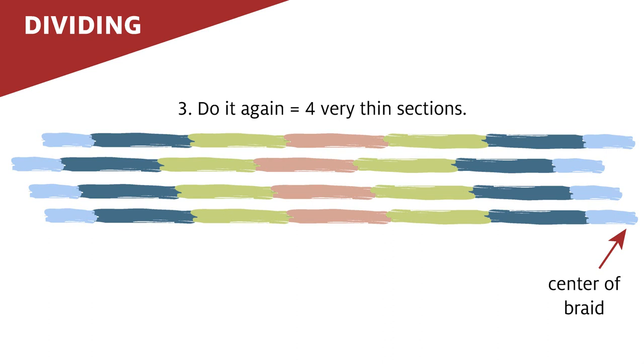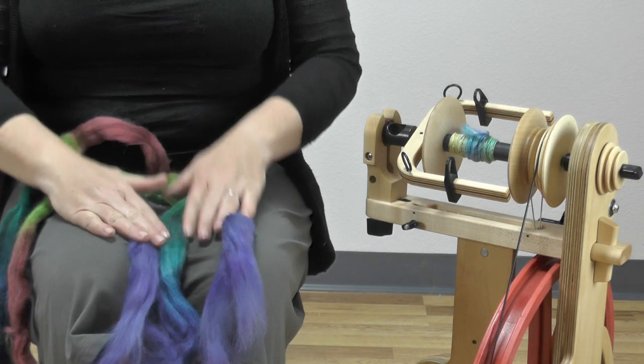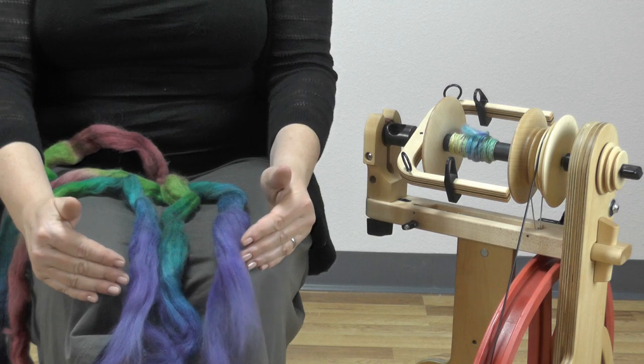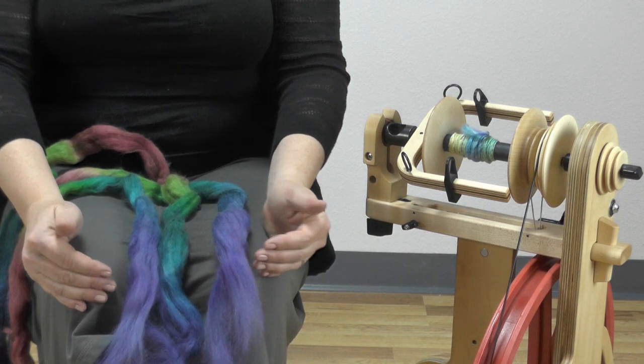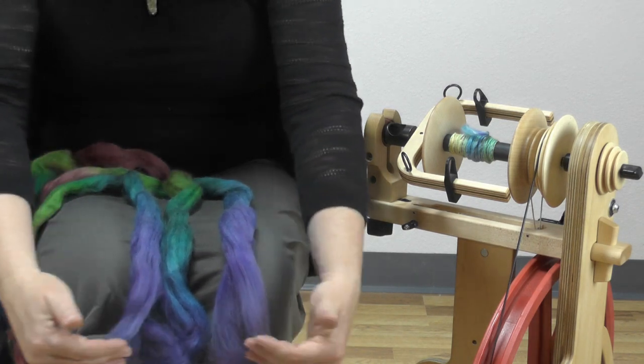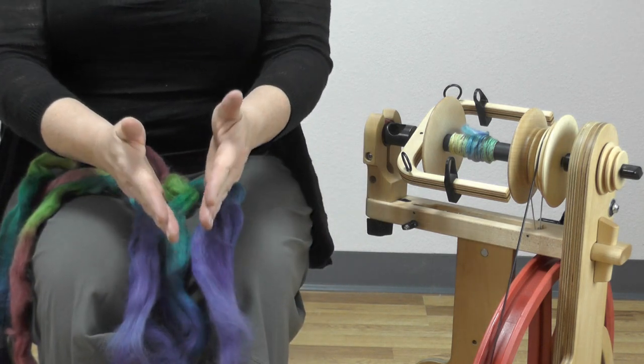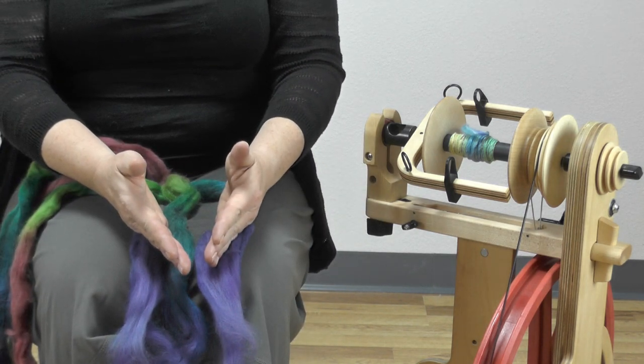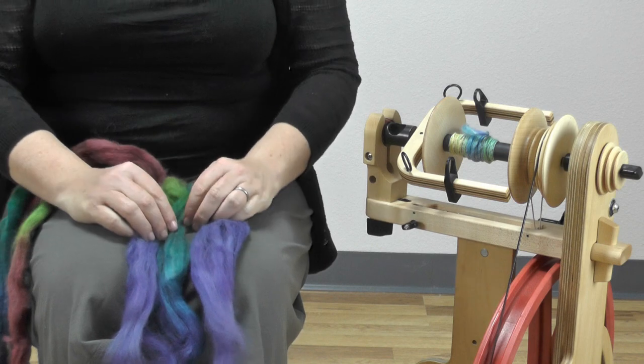Now I will take each of these halves and split them again and I maintain all the ends in the same orientation. So we know that all of the ends come from the same end of the braid. This helps maintain the fibers in the same direction that they were processed and aids in spinning later.